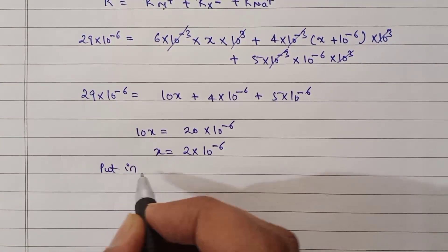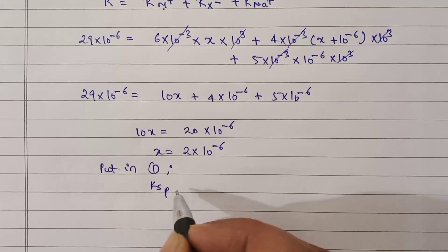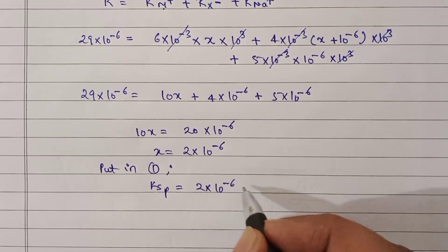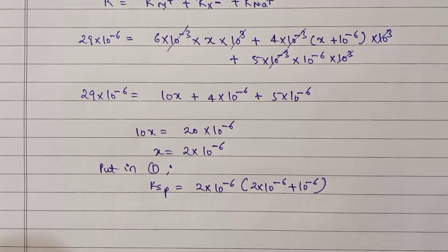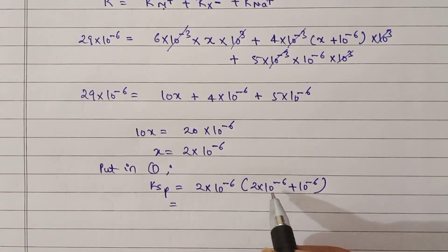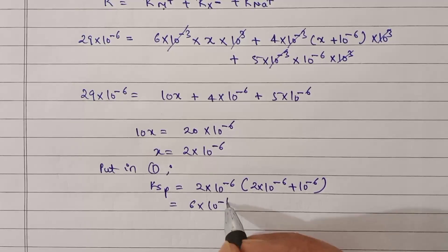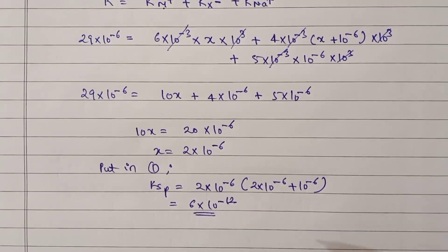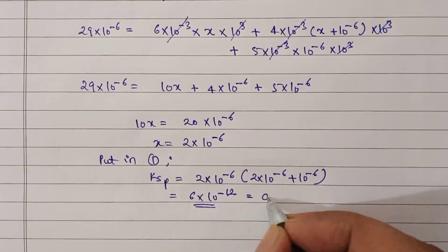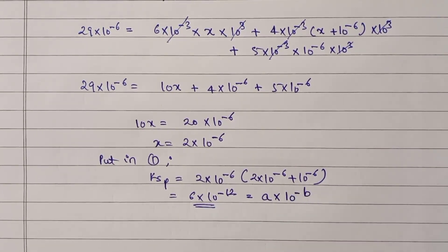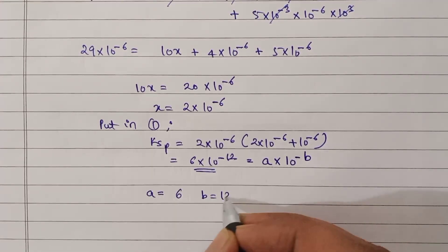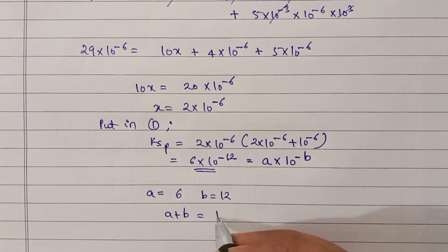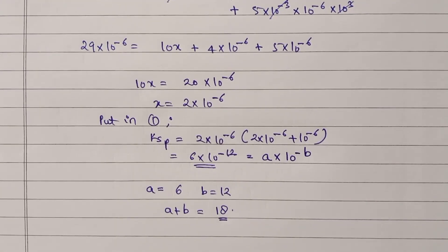Solving gives X = 2 × 10⁻⁶ molar. Substituting into equation 1: KSP = X × (X + 10⁻⁶) = 2×10⁻⁶ × 3×10⁻⁶ = 6 × 10⁻¹². So KSP = 6 × 10⁻¹², meaning A = 6 and B = 12. Therefore A + B = 18. This is the answer to problem 15. Thank you.